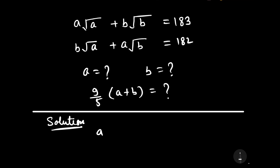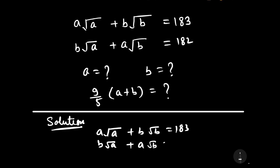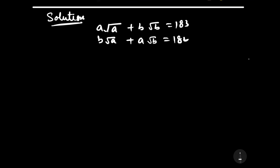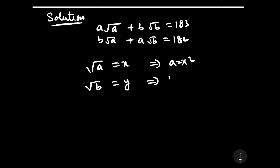Our first equation is a√a plus b√b equals 183, and the second equation is b√a plus a√b equals 182. Let us consider √a = x, which means a = x². Further, consider √b = y, which means b = y².